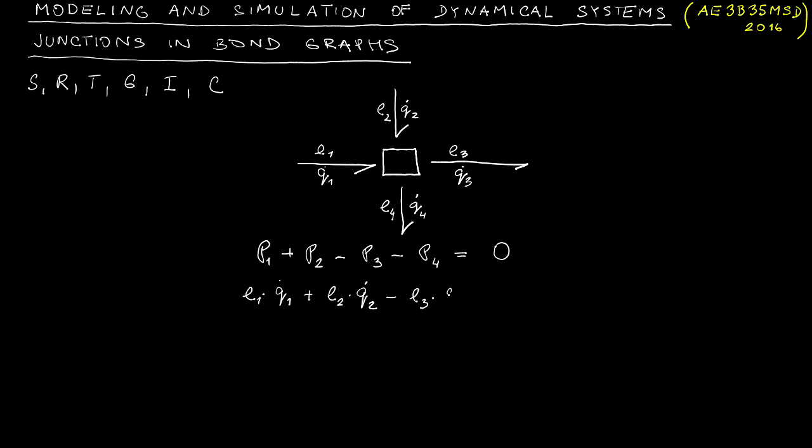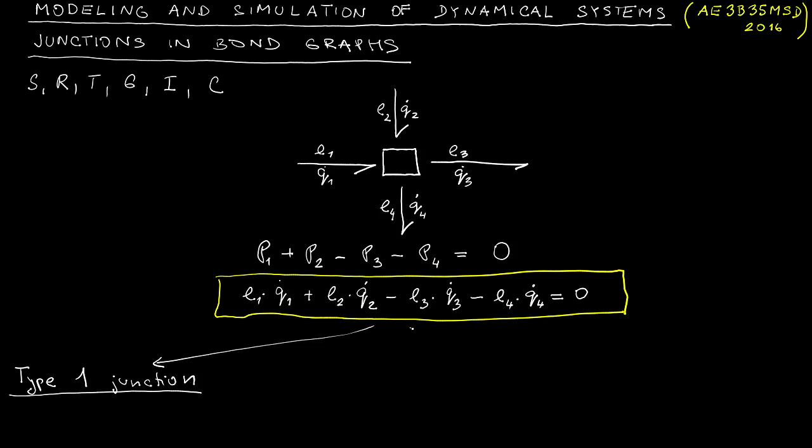Therefore, no power is generated, no power is stored, no power is consumed. We will consider two types of junctions, type 1 junction and type 0 junction.